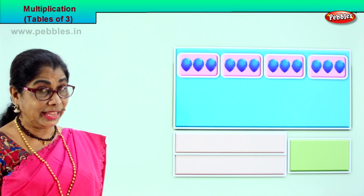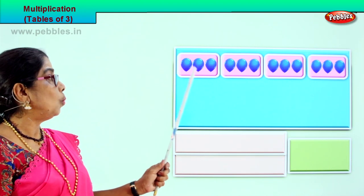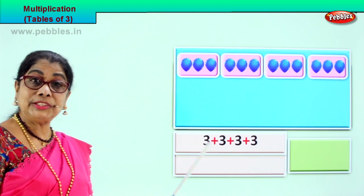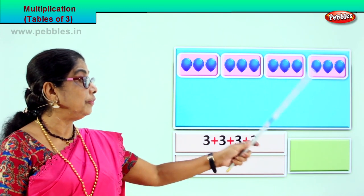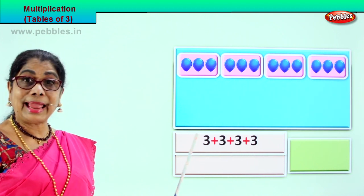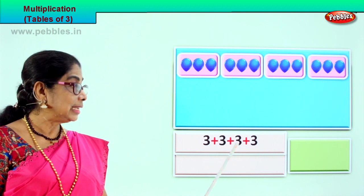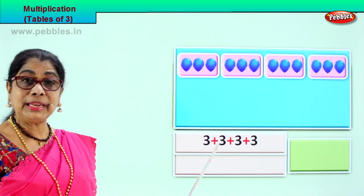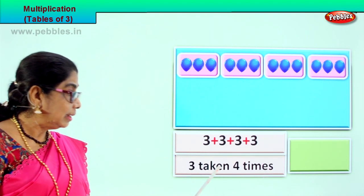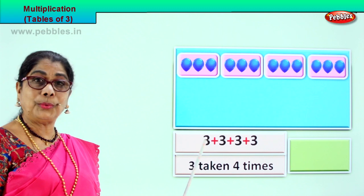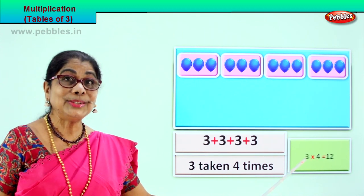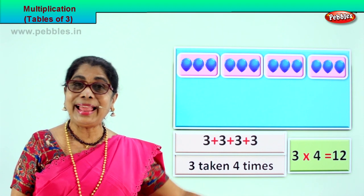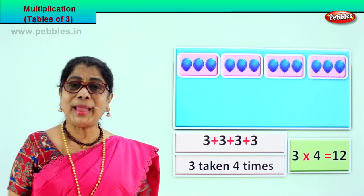Shall we get another grouping of three? Look what we have. How many groupings of three? One, two, three, four. Multiplication, repeated addition. Let's add all: three plus three is six, six plus three is nine, nine plus three is twelve. Three taken four times. Three into four is twelve. We read it as three fours are twelve.